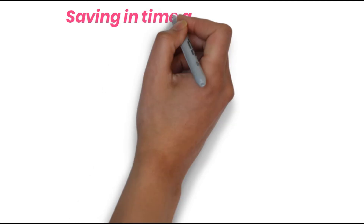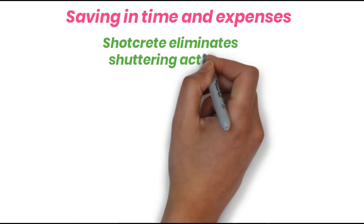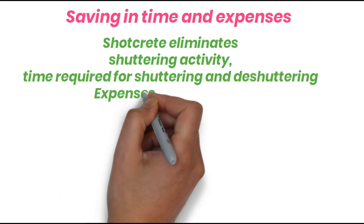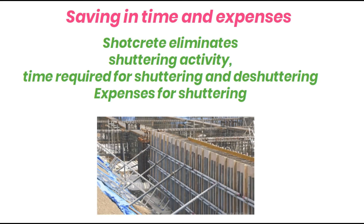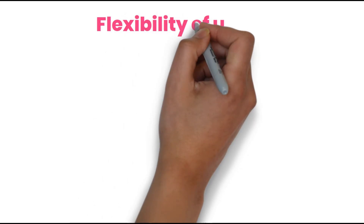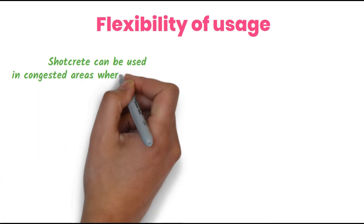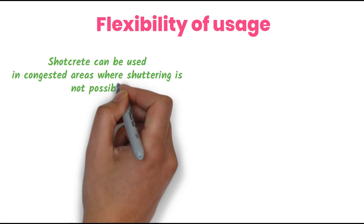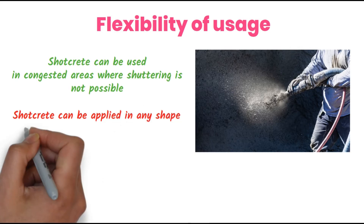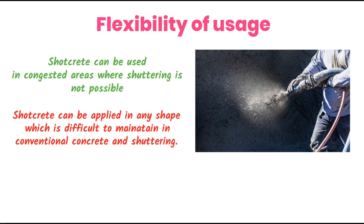Next is saving in time and expenses. Shotcrete eliminates shuttering activity, which is a main activity in construction. It saves time required for shuttering and de-shuttering, as well as expenses for shuttering. Next is flexibility of usage. Shotcrete can be used in congested areas where shuttering is not possible. Shotcrete can also be applied in any shape, which is difficult to maintain in the case of conventional concrete and shuttering works.